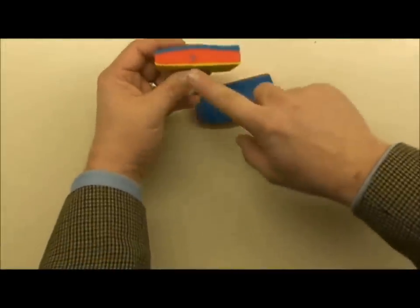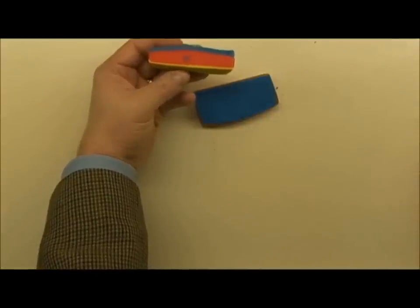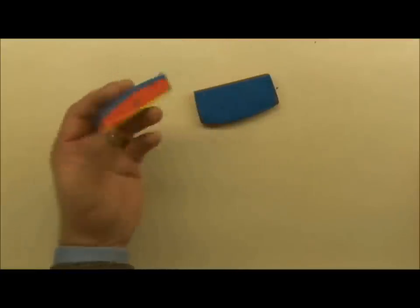And in yellow, these endoderm cells, what they're going to form is just the lining of the gastrointestinal, respiratory, and urogenital tracts. And we're going to follow that process in the next talk.